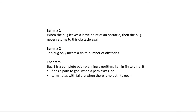We can show that the Bug 1 algorithm is a complete planner by proving two lemmas that in turn prove the theorem. Lemma 1 says: when the bug leaves a leave point of an obstacle, the bug never returns to this obstacle again. Lemma 2 says that the bug only meets a finite number of obstacles.